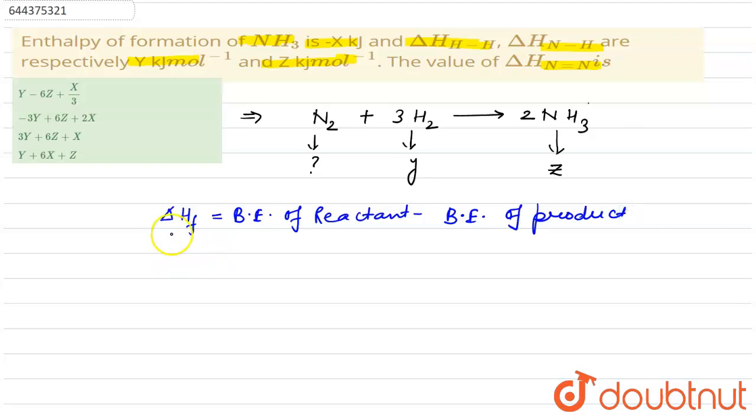So delta H is given as x. For 2 moles it will be 2x. So bond energy of reactants are nitrogen and hydrogen. For N₂ we can let it as A, plus for hydrogen it is y. For three moles of hydrogen, so it will be 3y.